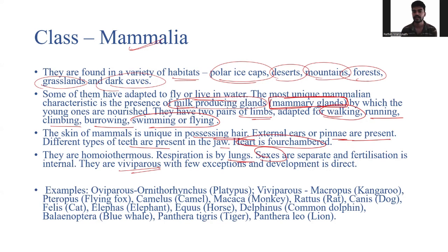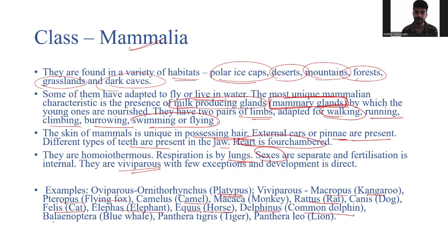One exception is the platypus, which is a mammal but still lays eggs. Development is otherwise direct. Examples — oviparous: Platypus and Echidna; viviparous: Macropus (kangaroo), flying fox (bat), camel, Macaca (monkey), Rattus (rat), Canis (dog), Felis (cat), Elephas (elephant), Equus (horse), Delphinus (common dolphin), and Balaenoptera (blue whale). Even though dolphins and blue whales live in water, they are considered mammals.